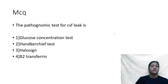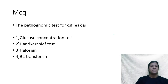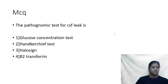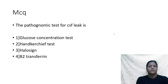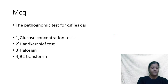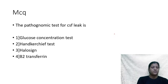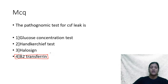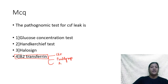Next question: the pathognomonic test for CSF leak is — (A) glucose concentration test, (B) handkerchief test, (C) halo sign, or (D) beta-2 transferrin? The correct answer is beta-2 transferrin, as it is present only in CSF, perilymph, and aqueous humor.